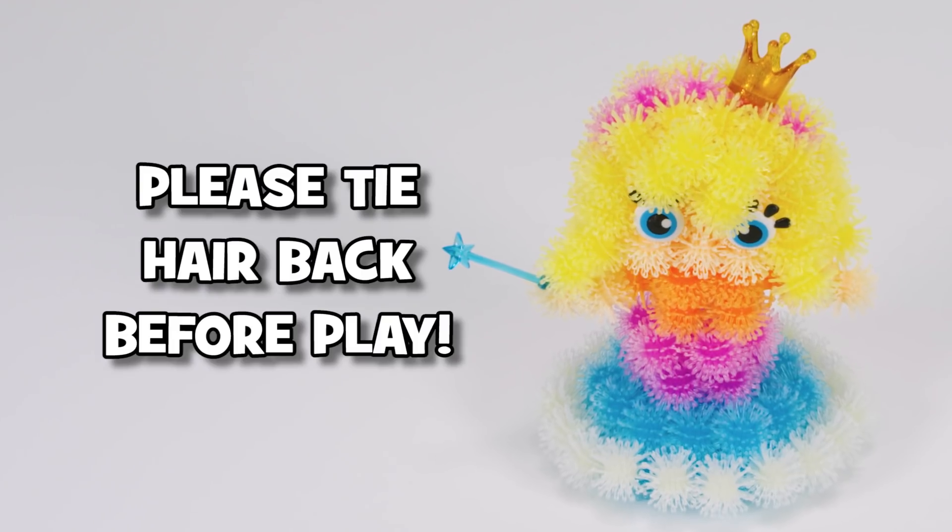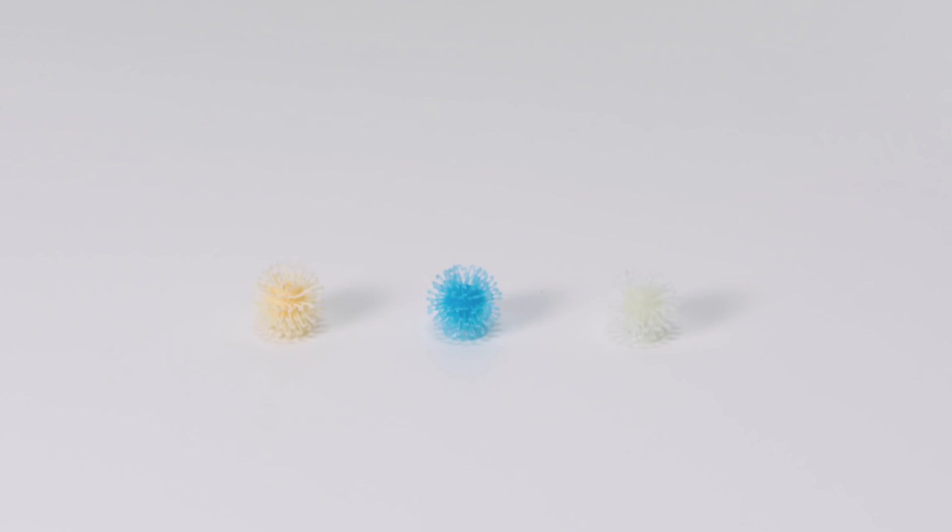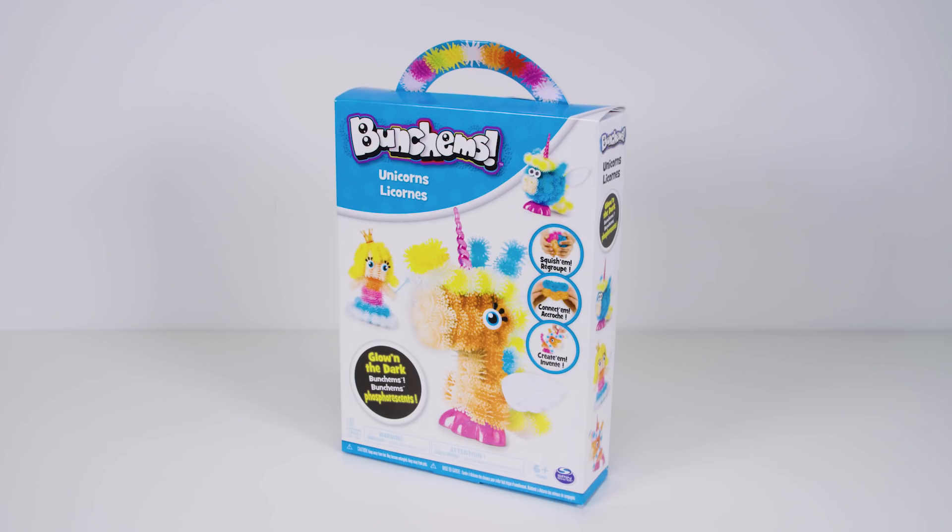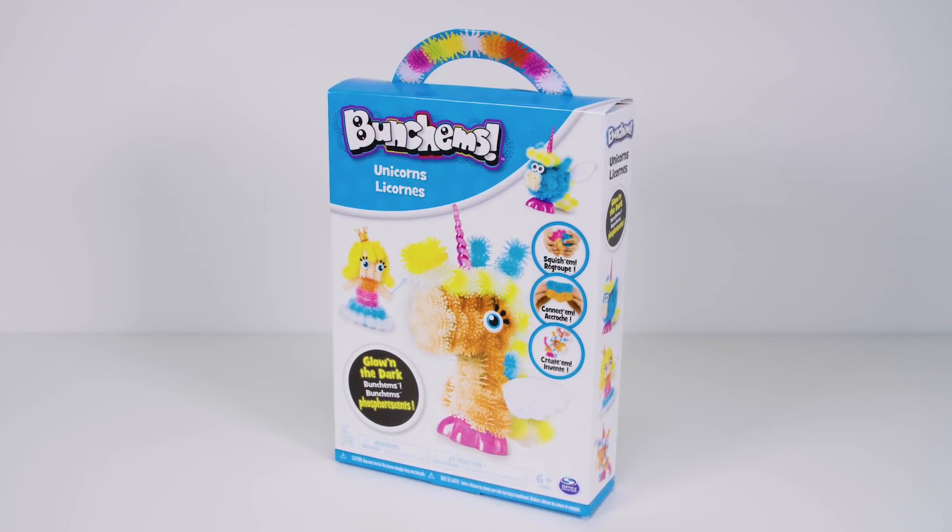Please tie hair back before play. The Bunchums Glow-in-the-Dark theme pack includes three different types of Bunchums: Bunchums, Crystal Bunchums, and Glow-in-the-Dark Bunchums. You'll find everything you need to make a fairy princess inside the Glow-in-the-Dark Unicorns theme pack.